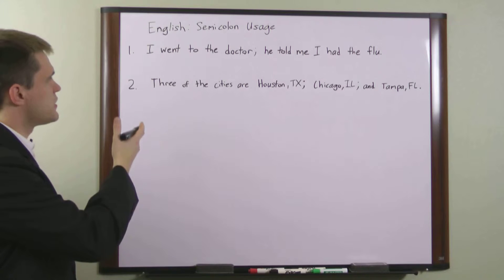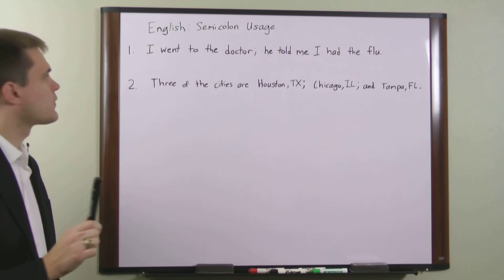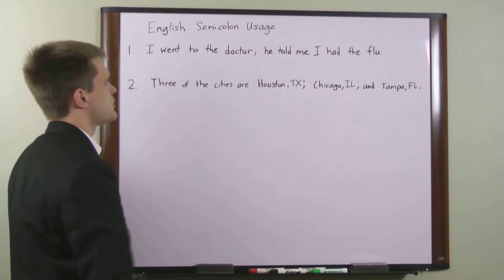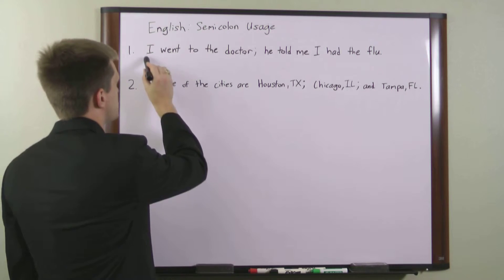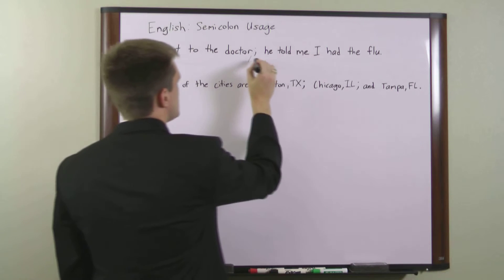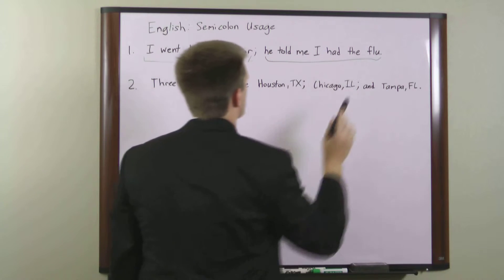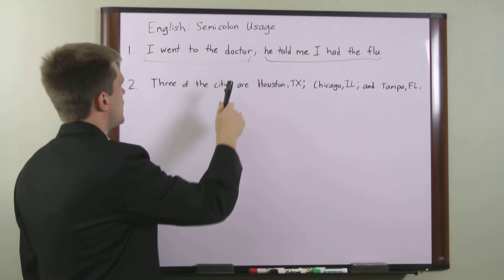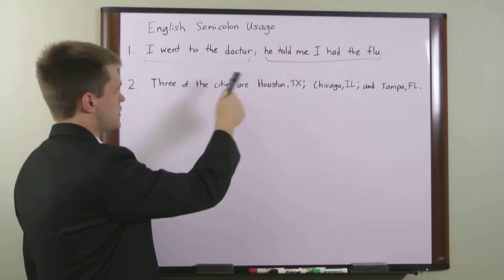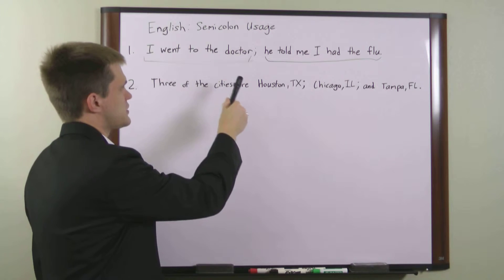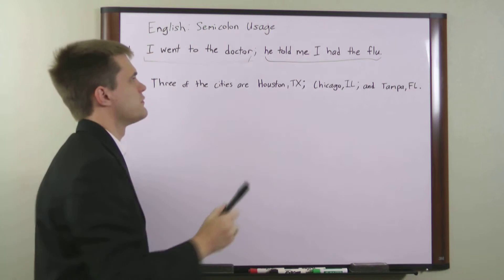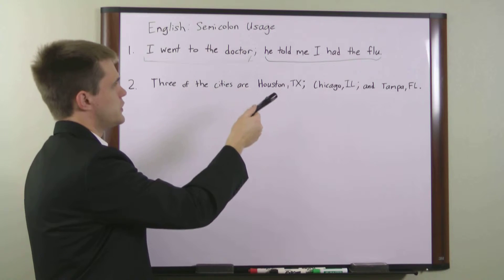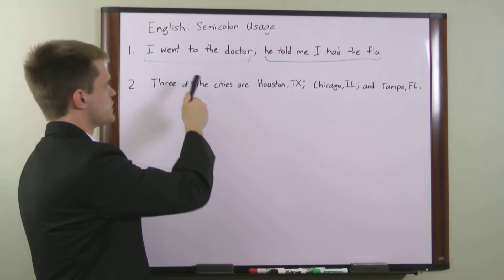Here we have one example sentence for each usage. In this first one, we have two independent clauses separated by a semicolon. Each of these clauses could stand on its own as a sentence, but we've chosen to combine them into a single sentence with a semicolon. It's proper to use a semicolon here because the two phrases — 'I went to the doctor' and 'he told me I had the flu' — are very closely related to one another.